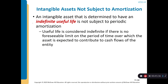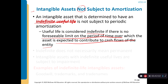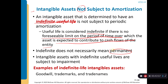Intangible assets with indefinite useful lives — meaning no foreseeable limit on the period over which the asset contributes to cash flows — are not amortized. Note that indefinite does not mean permanent. Such assets, including goodwill, certain trademarks, and trade names, are subject to an impairment test rather than periodic amortization.